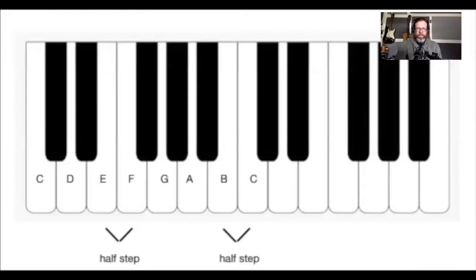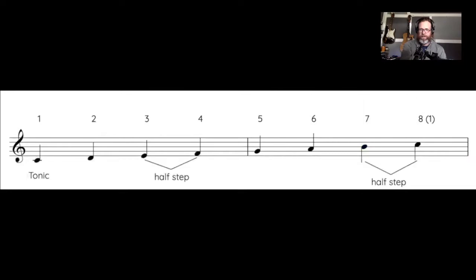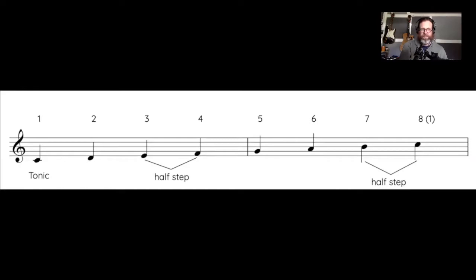So now if we take that same idea and attach scale degree numbers to each of those natural notes, we find that there are half steps naturally occurring between scale degrees three and four, and seven and one—naturally occurring in the key of C with the natural notes in the keyboard.